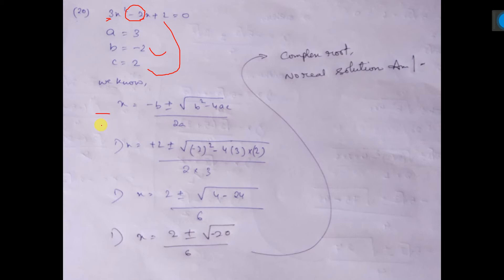Now, Sridhar Acharya formula apply: x equal to minus b plus minus root over of b square minus 4ac by 2a.